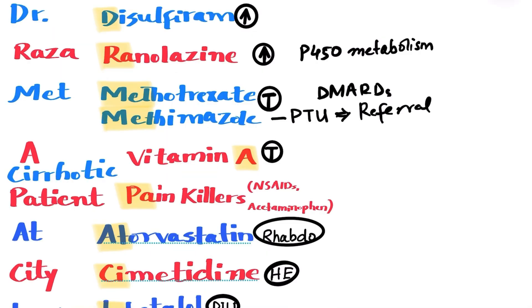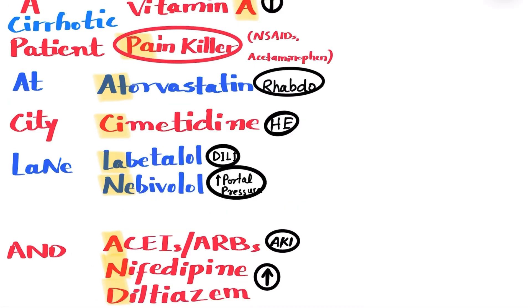A stands for vitamin A, which is another hepatotoxic medication that should be avoided in these patients. Cirrhotic refers to cirrhosis or liver failure patients in general. Up till now, we have discussed the individual medications that should be avoided in cirrhotic patients. From now, we will be discussing the groups of medications that should be avoided.